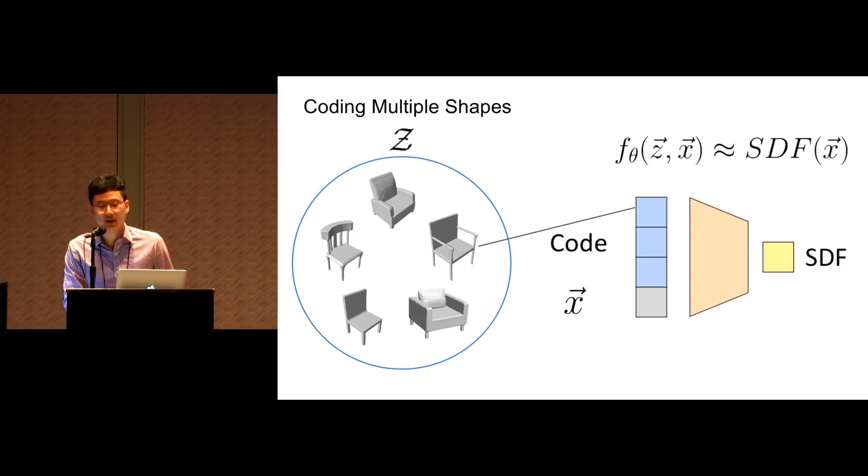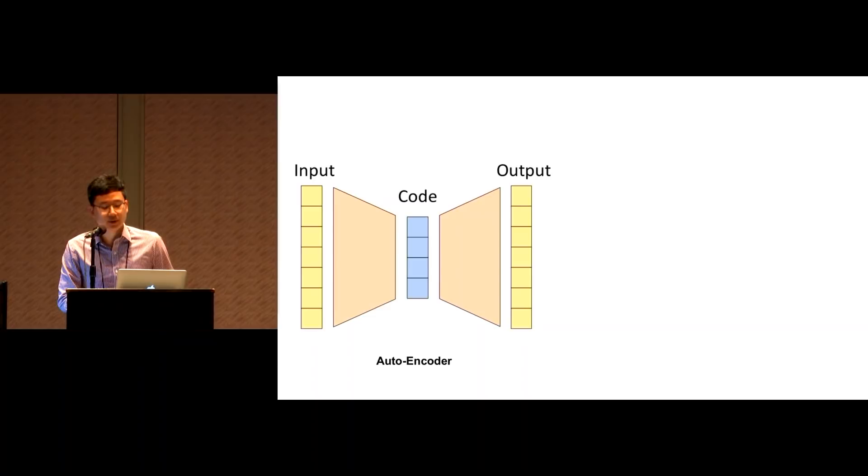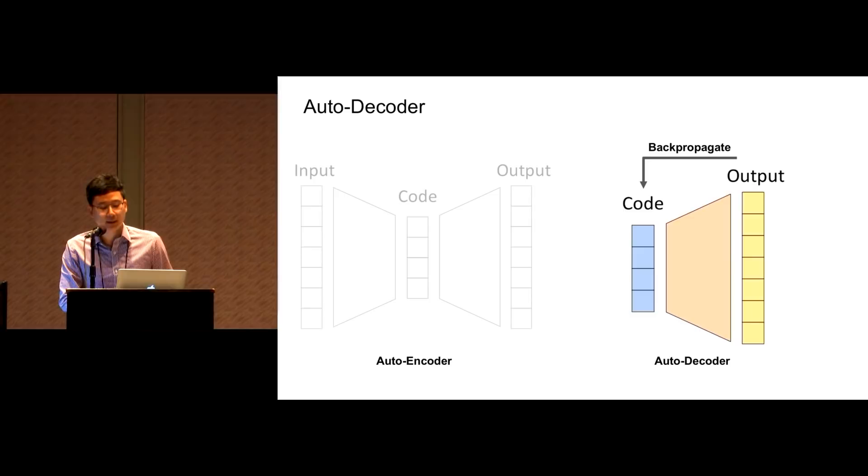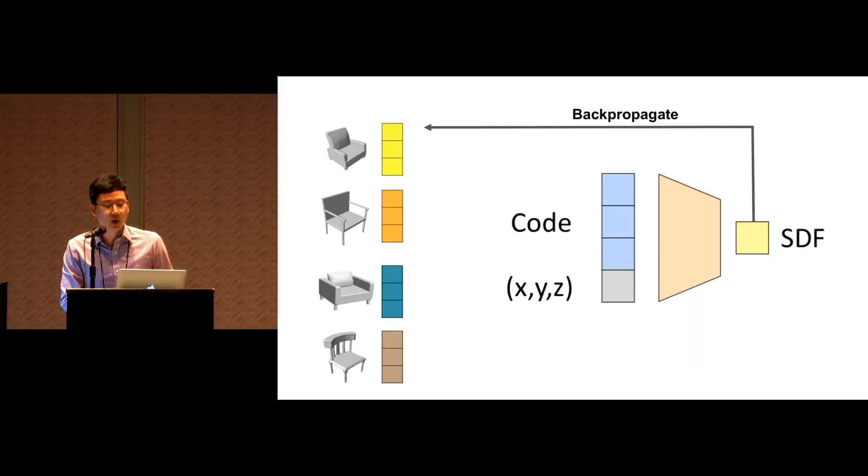And we regress the signed distance function using a fully connected neural network. This neural network takes as input an XYZ coordinate and outputs the predicted SDF value of that position. To model a data set of shapes, we condition the network using a latent code Z. This latent code encodes the information of a shape that can be interpreted by the decoder network. Now the question is how to obtain the meaningful latent space of shapes. Traditionally, this was done by training an autoencoder. However, it is not clear for us how to design an encoder to process a continuous signed distance function.